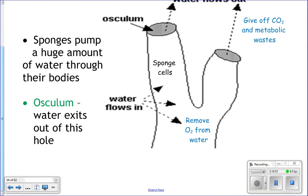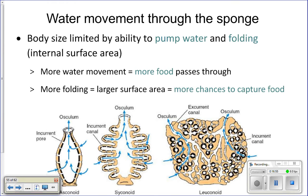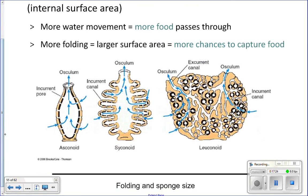Water exits out the osculum. The amount of water moving through the sponge will determine how big a sponge can get. Sponges need energy to grow, and to get energy they need to feed. Two things affect the amount of food they get: their ability to pump water — how much water they can pump — and how much folding they have in their bodies. More water pumped means more food filtered.